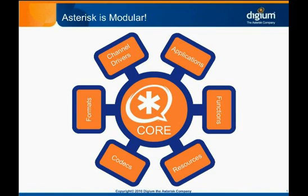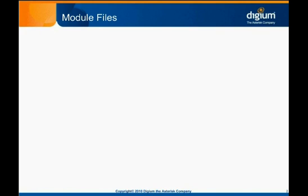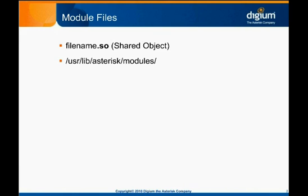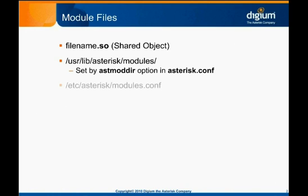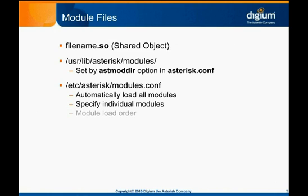This distinction is not overly important, but may be helpful in clarifying the rest of this discussion on Asterisk's architecture. Asterisk modules are files on the Linux system and end in .so, standing for shared object. These library files are loaded by default from the /usr/lib/asterisk/modules directory, or from wherever the astmoddir option in asterisk.conf specifies. The /etc/asterisk/modules.conf lets an administrator decide whether Asterisk should automatically load all modules found in the module directory, or whether individual modules must be specified to be loaded. Module load order can also be defined here.